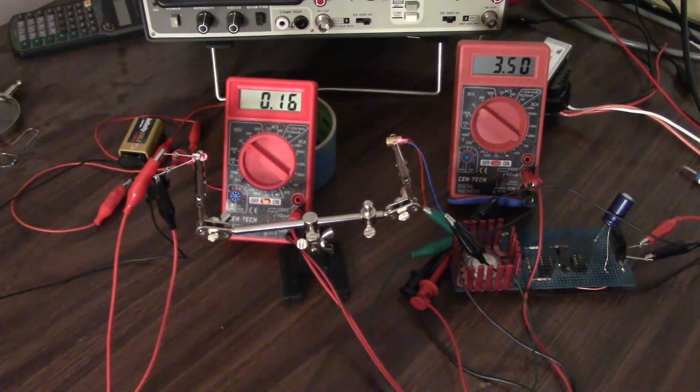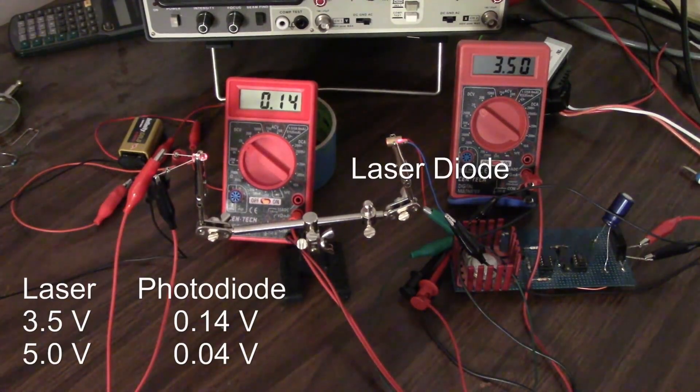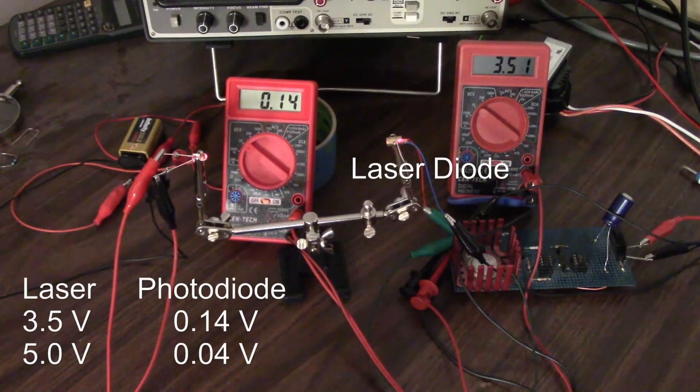So at 3.5 volts we get 0.1, that seems more stable at 0.14. So we changed the voltage across the diode from 5 volts to 3.5 volts, and we got a change of one-tenth of a volt on the diode.